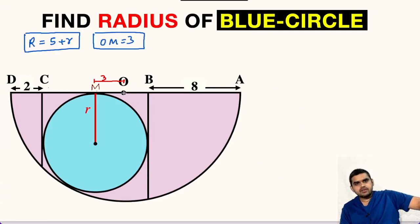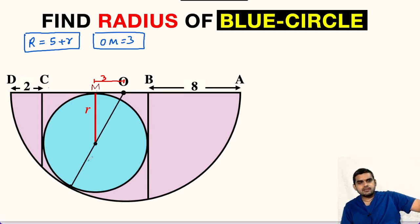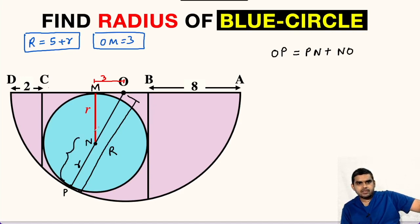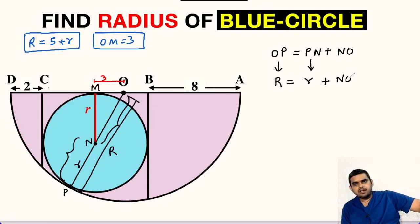Moving ahead, let us do one construction. From point O, let us connect to the center of the circle. If we extend this line it will touch at the point of contact. This point is M, this point is N, and let us name the contact point as P. NP will equal r. From O to P this distance is the radius of the semicircle, capital R. So OP equals PN plus NO, meaning capital R equals small r plus NO.